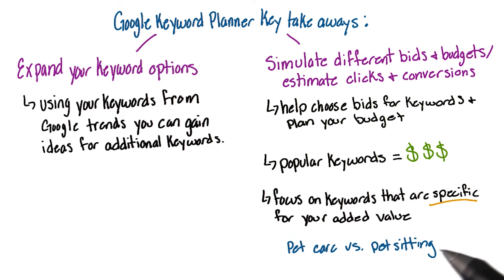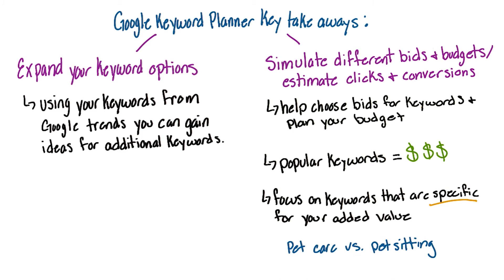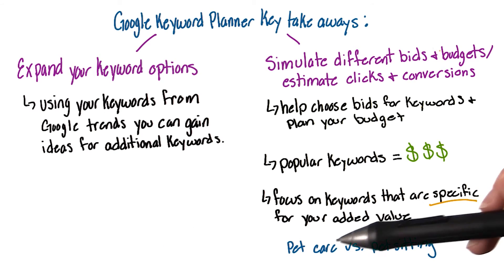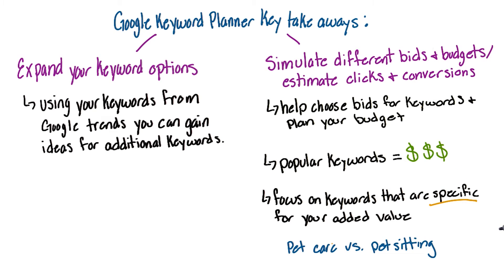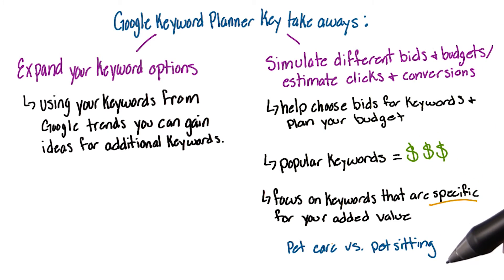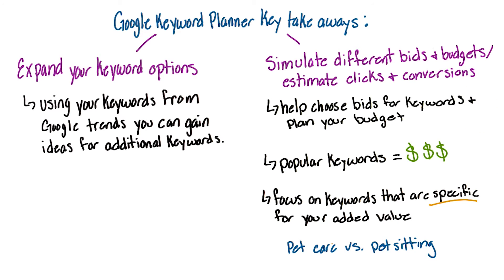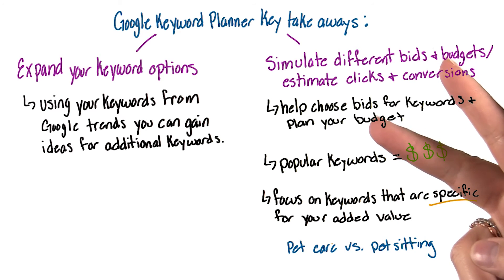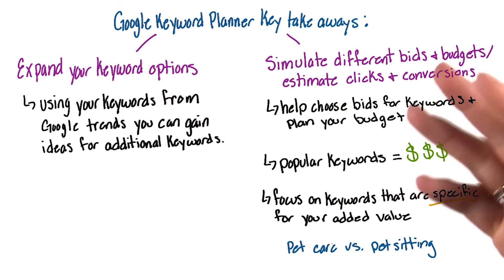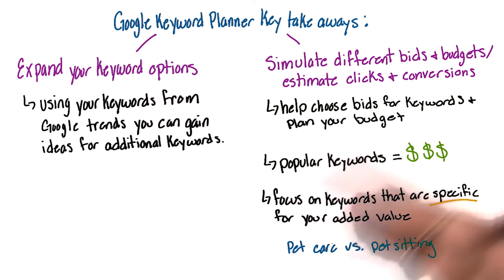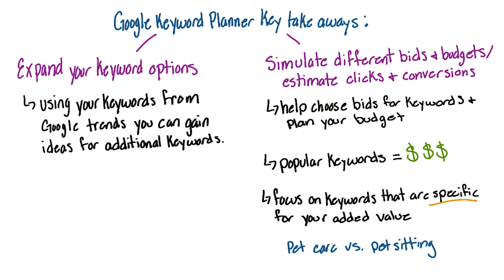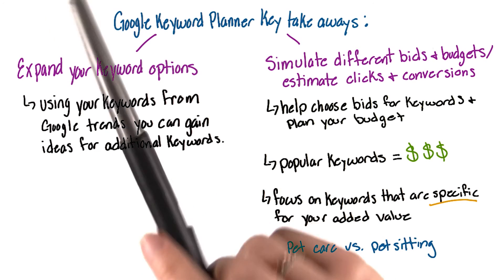For us, for example, we learned in Google Trends that pet care is a more popular search term than pet sitting. So we may want to go with that search term and reach a bigger audience. However, the truth of the matter is, then we would be competing with veterinarian services, insurance for pets, and other advertisers who have a much larger budget than we do at Abarkment.